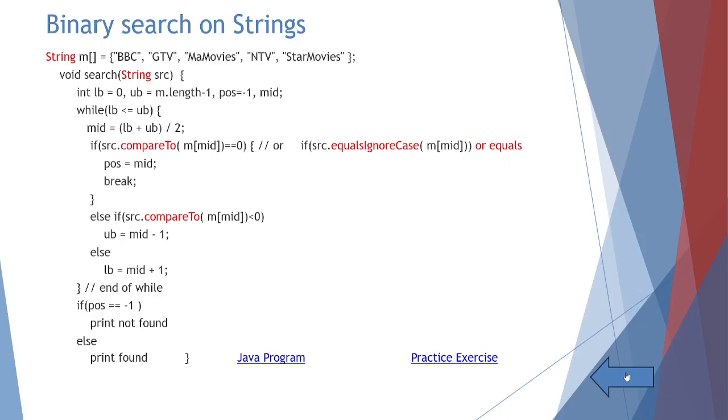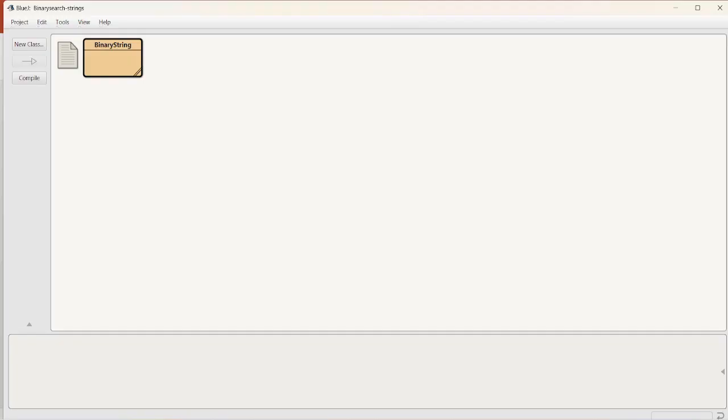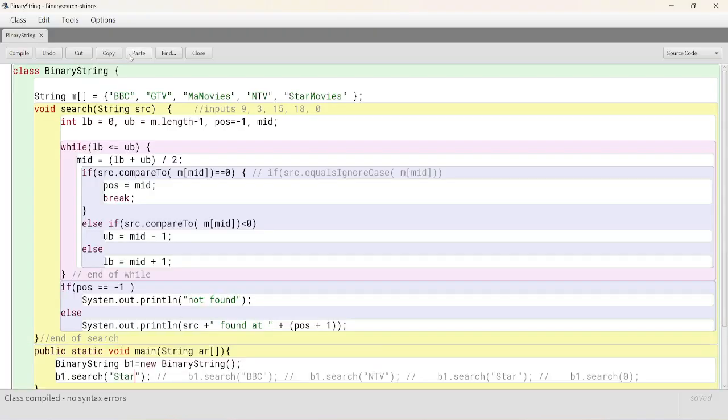Let's see the program in the Java environment. The contents of binary string are like this. String M, BBC, GTV, MAMOVIES and so on and so forth. The same program, compareTo we have used here, compareTo we have used here. And static void main is creating an object of binary string B1, new binary string and calling B1.search because it is an instance method. Okay, we are giving let's suppose star. Is there any star over here? Star movies is there but not star. So, it should give us not found. Let's execute.